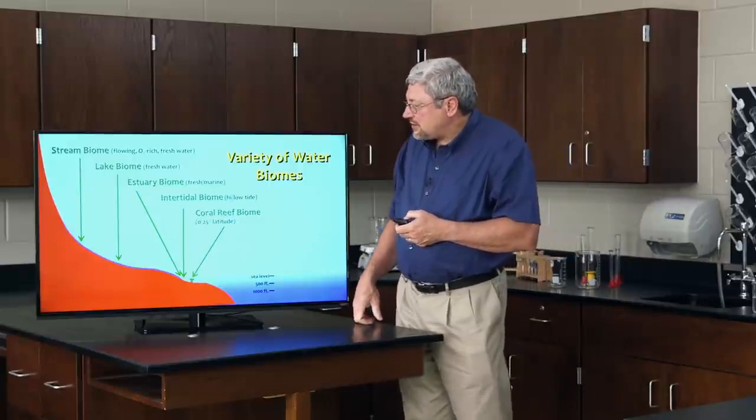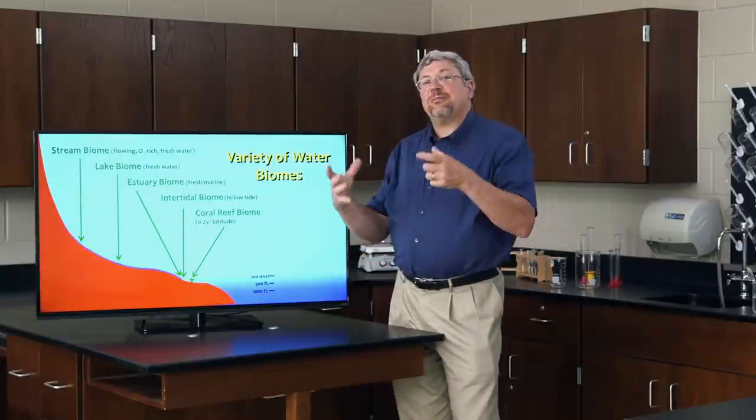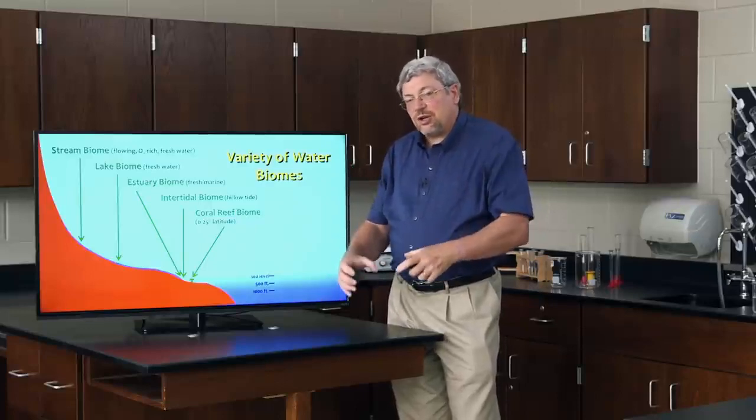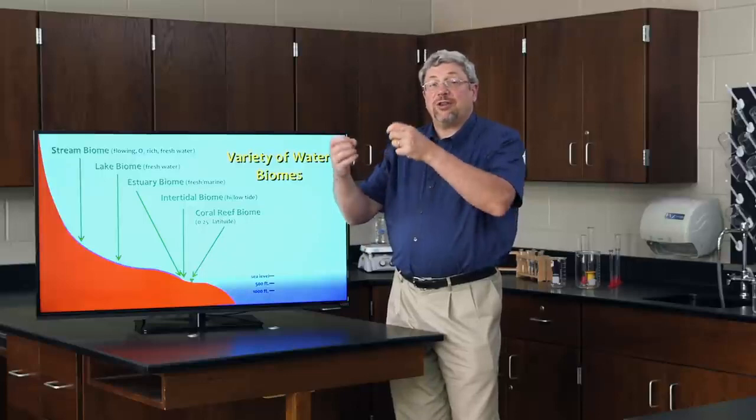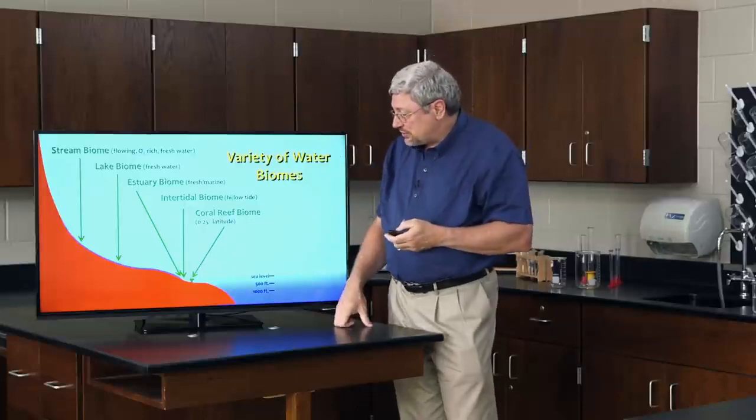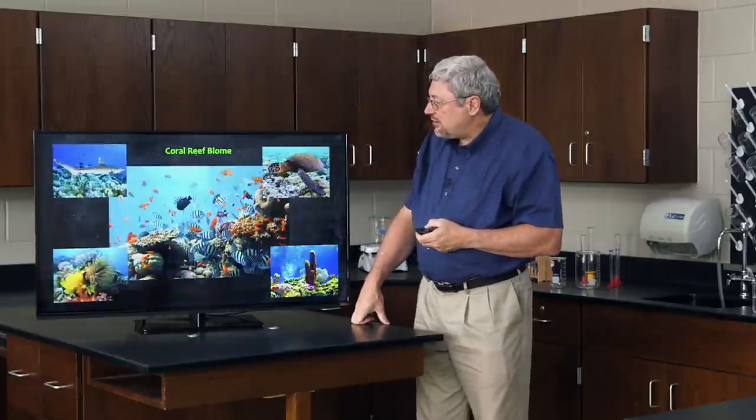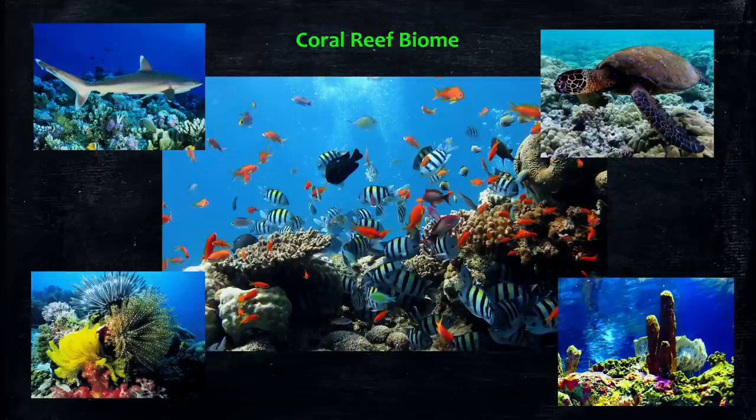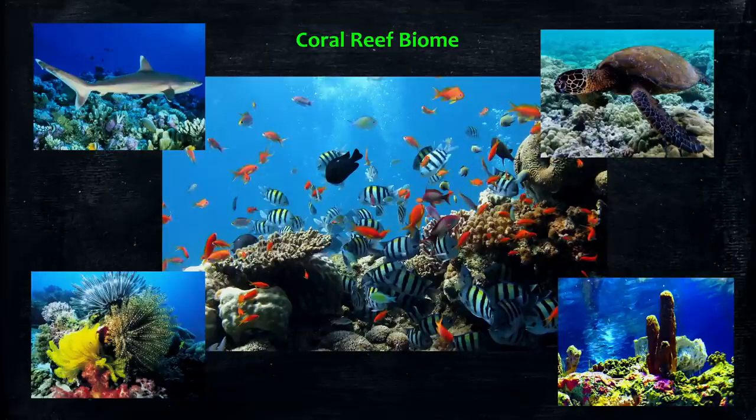The coral reef is actually built up from the bottom of the ocean at that point by organisms that grow on top of one another and make their way towards the surface. Most of the coral reef biome is constructed of sponges and corals that are rather hard in structure and they'll grow up and on top of one another moving towards the surface of the water.